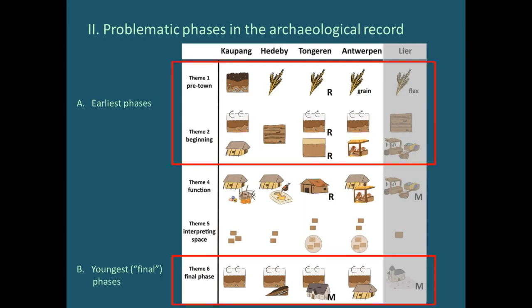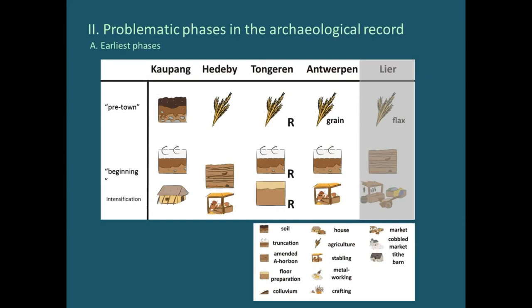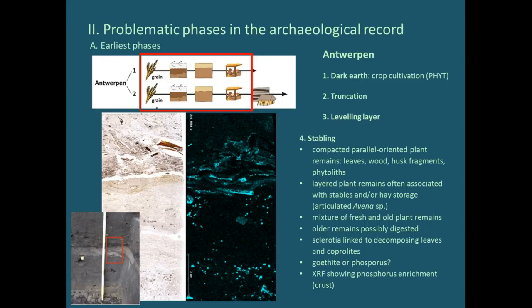Looking at the problematic phases in the archaeological record — the earliest ones — I've grouped these as pre-town and beginning, because it's really difficult to pinpoint exactly when a town becomes a town. Illustrating this with Antwerp: we saw a change from a dark earth at the base, where crop cultivation was occurring, then a truncation — a removal of soil — then a short leveling layer, then an animal stabling layer. We could see this microscopically and with elemental analysis, and what we really see as the first phase is an intense animal stabling in both sampled locations.